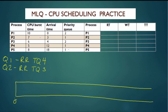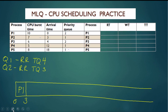At time 0, the only process that has arrived is P1, so P1 will go first. P1 is a Q2 process, so it does round-robin with a time quantum of 3. Since it's Q2, we also need to check at every time unit to see if there's an arrival of a Q1 process. There is no Q1 arriving in the first three time units, so P1 finishes at time 3 and goes back into the ready queue with seven time units of CPU burst left.